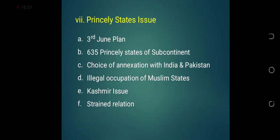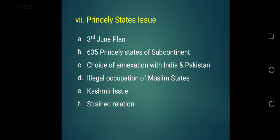The other major problem was that of the princely states. According to the third June plan, all 635 princely states would have to decide whether to become part of Pakistan or India, based on two conditions: geographical location and the population of their state. If geographically connected with either country, they could decide in favor of that country. If the population was Muslim, they would join Muslim Pakistan, or otherwise India. The Indians forcefully occupied some Muslim states.